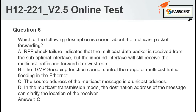Question 6: Which of the following descriptions is correct about multicast packet forwarding? A. RPF check failure indicates that the multicast data packet is received from the sub-optimal interface, but the inbound interface will still receive the multicast traffic and forward it downstream. B. The IGMP snooping function cannot control the range of multicast traffic flooding in the Ethernet. C. The source address of the multicast message is a unicast address. D. In the multicast transmission mode, the destination address of the message can clarify the location of the receiver. Answer: C.